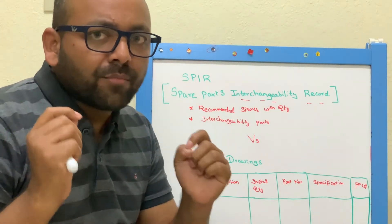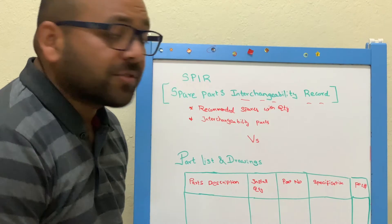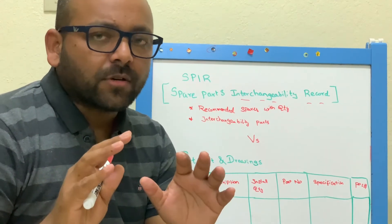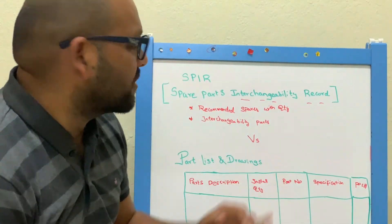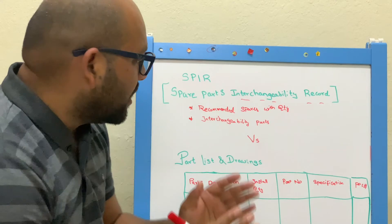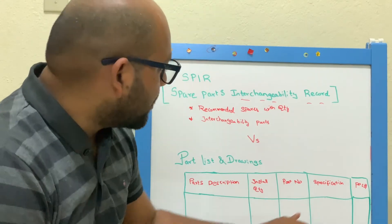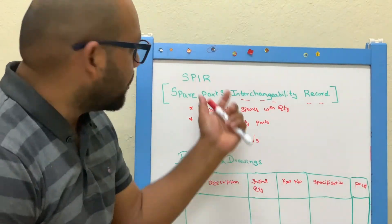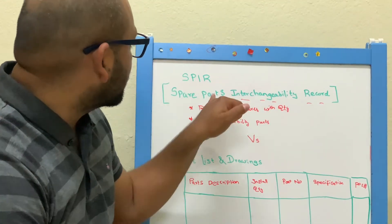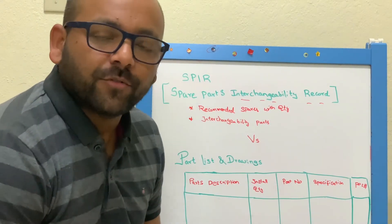It is very important to understand the difference between the part list and drawings and the SPIR. I hope this video has given you a brief idea. If you are in the industry, search online, find drawings, and practice to understand more. The major difference is: the part list and drawings provide generic information about component assembly — position number, specification, and part number. But the SPIR is like a master list that recommends what you need in the right way. See you soon with other useful videos. Thank you.